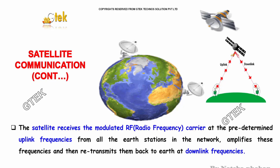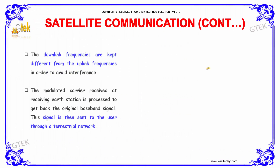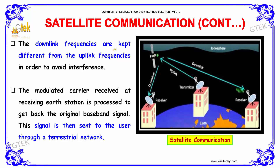From the S-station to the satellite it is uplink; from the satellite back down it is downlink. The downlink frequencies are kept different from the uplink frequencies in order to avoid interference. The modulated carrier received at the receiving S-station is processed to get back the original baseband signal, which is then sent to the user through a terrestrial network.